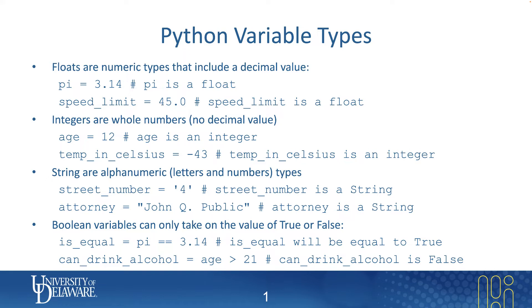In the second example, we're dealing with integers. Integers are whole numbers, and these are commonly used. In the first example here, we have age — because we're setting age to 12 and not 12.0, Python will consider age to be an integer or a whole number. In the second example, temp_in_celsius has a value of negative 43. Negative values can also be used as integers, so temp_in_celsius is also considered to be an integer.